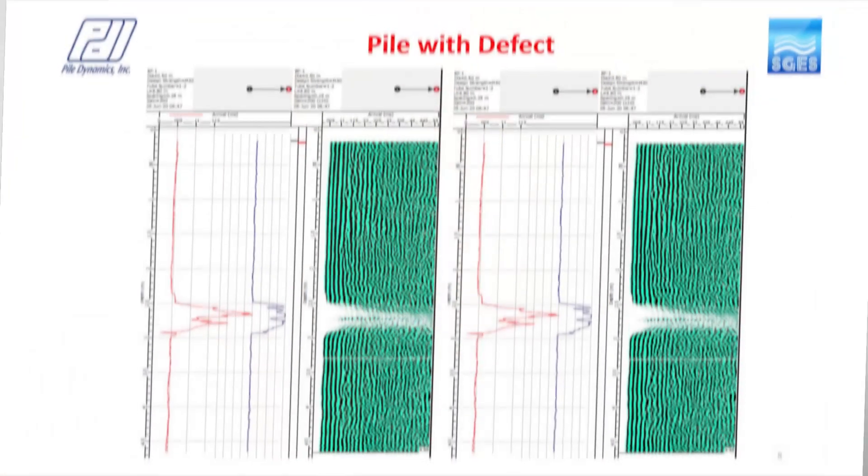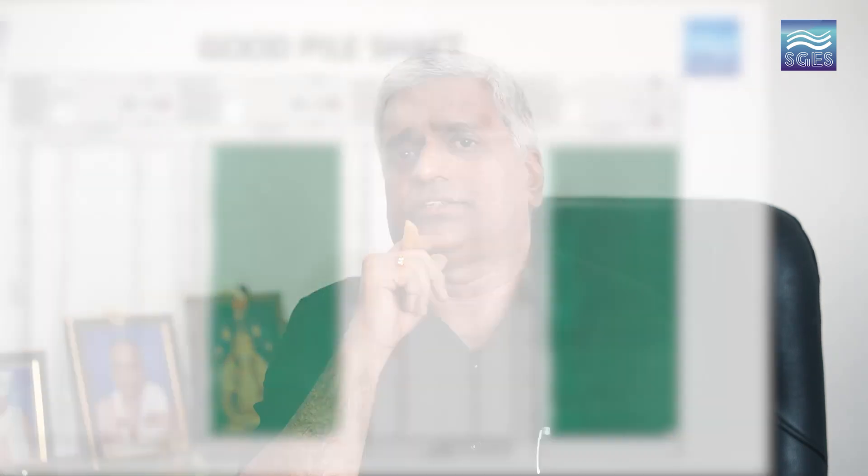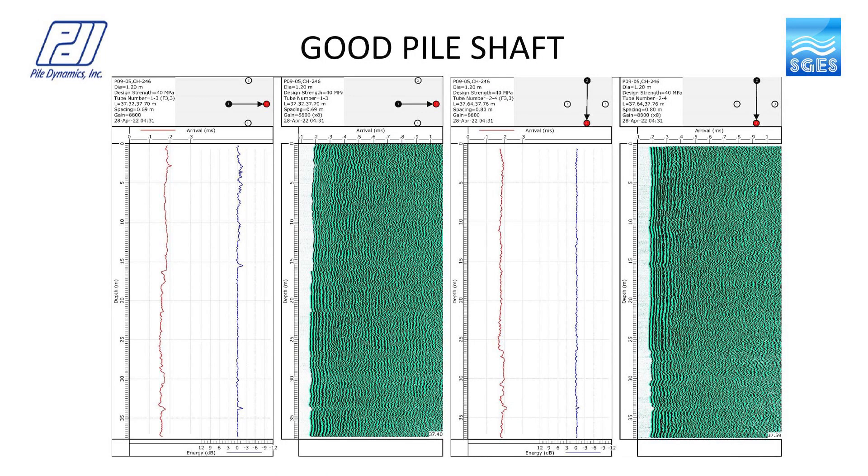When the leading edge of the waterfall diagram aligns with the first arrival time, the pile can be qualified as a good pile with good integrity. When there is a delay in the first arrival time, a reduction in energy, or a complete loss of signals in the waterfall diagram, that portion can be qualified as having a defect. Energy is the integral of the amplitude within a known number of data points. The data shown on screen has a leading edge almost similar to the first arrival time, qualifying this as a good pile.